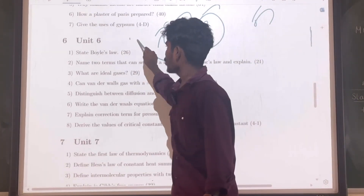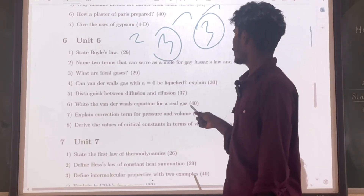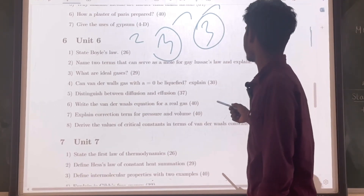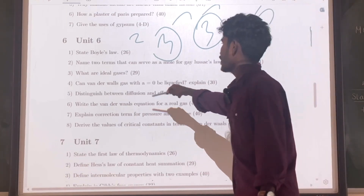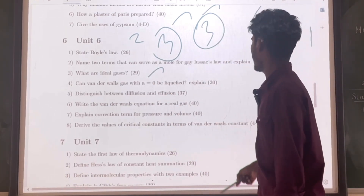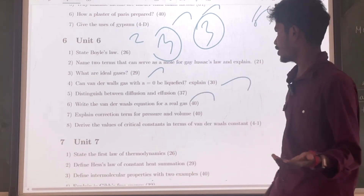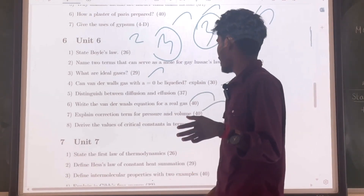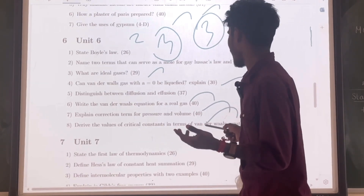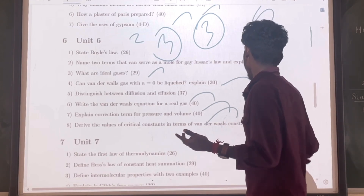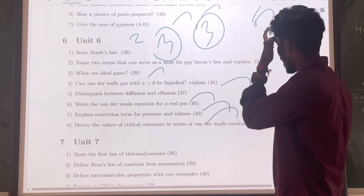Unit 6. Boyle's law — very important, 2 mark question. Question number 26. Question number 29: Name the terms that can serve as a mole of Gay-Lussac's law and explain. Question number 29: What are ideal gases? — very important. Question number 30. Question 37: Distinguish between diffusion and effusion. Question 40: Van der Waals equation of real gas — very important — and explain the correction terms for pressure and volume. Question number 41: Derive the values of critical constants in terms of Van der Waals constants.